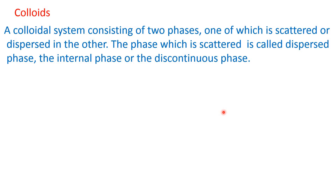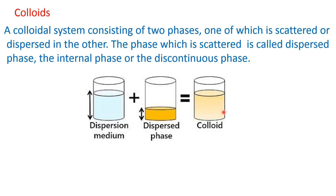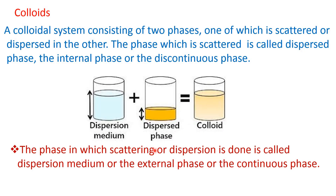A colloidal system consists of two phases, meaning it is a heterogeneous system where one phase is scattered or dispersed in the other phase. The phase which is scattered or dispersed is called the dispersed phase, internal phase, or discontinuous phase. The particles of this phase are dispersed in another medium called the dispersion medium. The phase in which the scattering or dispersion is done is called the dispersion medium, external phase, or continuous phase.